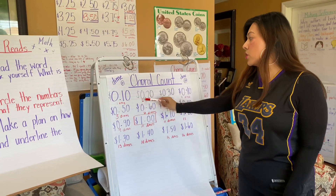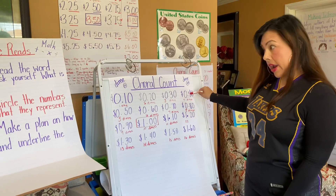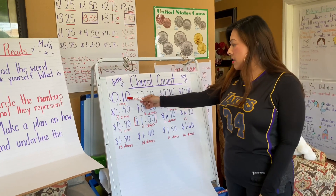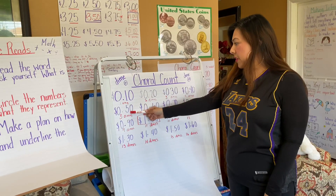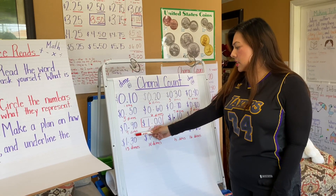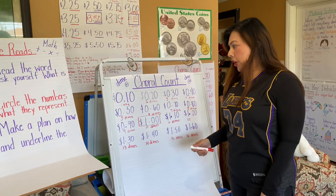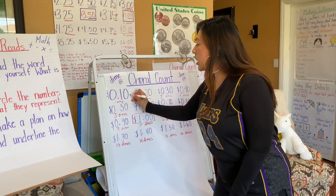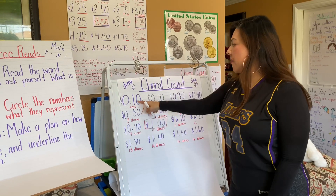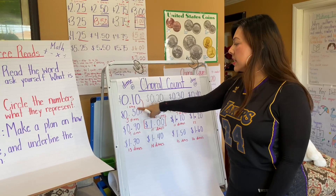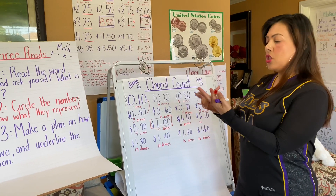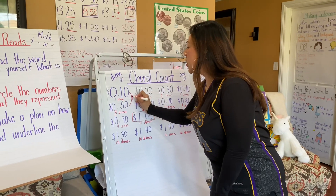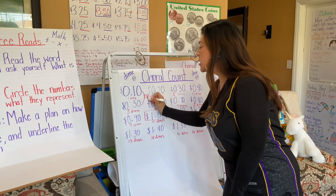Going right: one dime, 10, 20, 30, 40. Now let's look down. Here I have 10 cents, then 50 cents, then 90 cents, then $1.30. What does it increase by going down? If I go from 10 cents to 50 — that's 10, 20, 30, 40, 50 — it increases by 40 cents. Let's see if that pattern is true: from 50 cents to 90 cents — 50, 60, 70, 80, 90 — does our pattern check? It sure does.